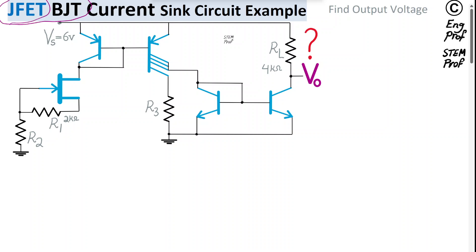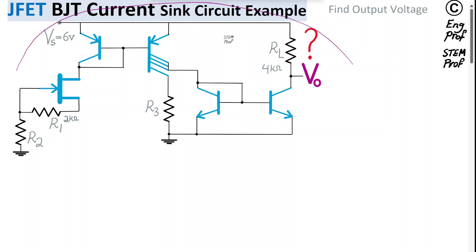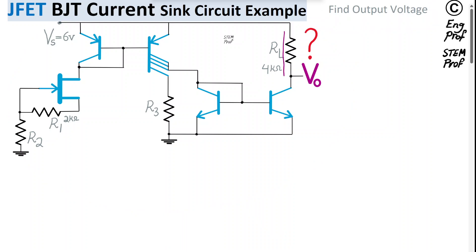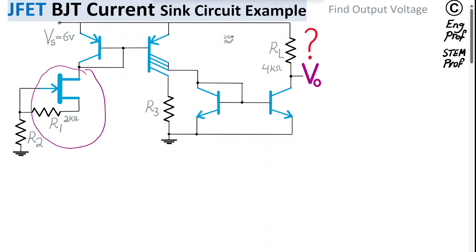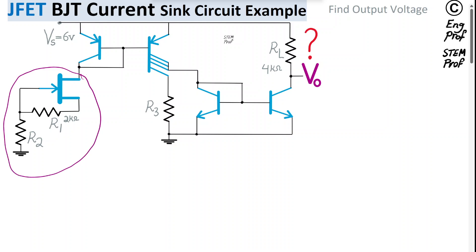A compound junction field effect and bipolar junction transistor current sink circuit example is discussed in this video. We want to see how the circuit is functioning and what is the output voltage Vout because of the current passing through the resistor load RL with a nominal value of 4 kilo ohm. At the very left side we have one n-channel JFET that is setting up the current for us properly.